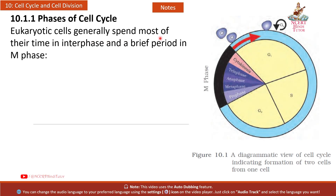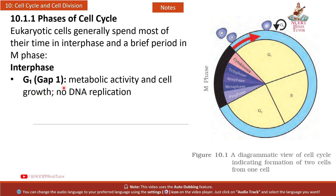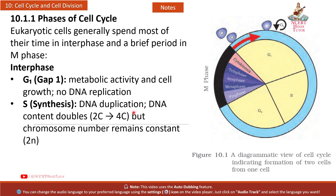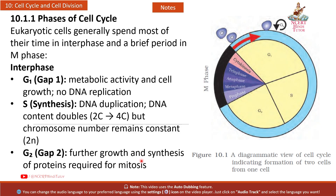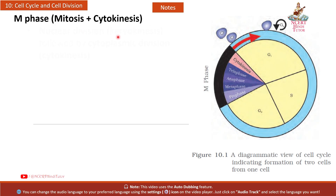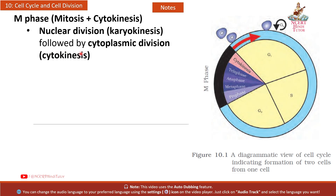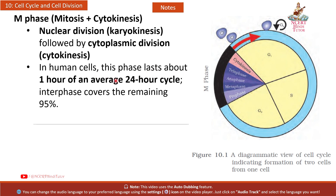10.1.1 Phases of Cell Cycle: Eukaryotic cells generally spend most of their time in interphase and a brief period in M phase. Interphase includes: G1 (Gap 1) — metabolic activity and cell growth, no DNA replication; S (Synthesis) — DNA duplication, DNA content doubles from 2C to 4C but chromosome number remains constant (2N); G2 (Gap 2) — further growth and synthesis of proteins required for mitosis. In human cells, M phase lasts about 1 hour of an average 24-hour cycle; interphase covers the remaining 95%.